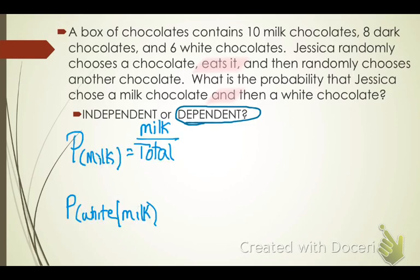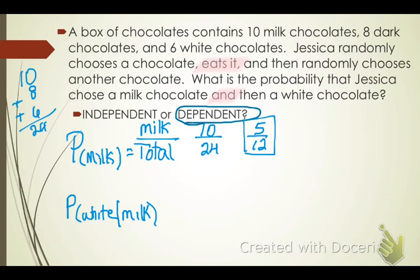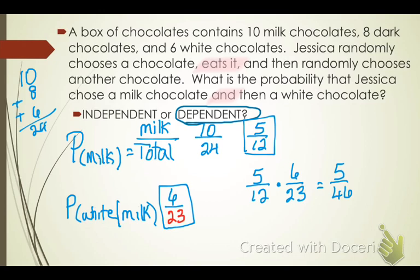I'm going to find the probability of choosing a milk chocolate and then choosing a white chocolate given that she has already chosen a milk chocolate. The total is 24 chocolates. There are ten milk chocolates, so ten twenty-fourths reduces to five-twelfths. Then there are six white chocolates, but the second time she chooses there are only 23 in the box. So five-twelfths times six twenty-thirds gives five forty-sixths, which is 0.11 or 11 percent.